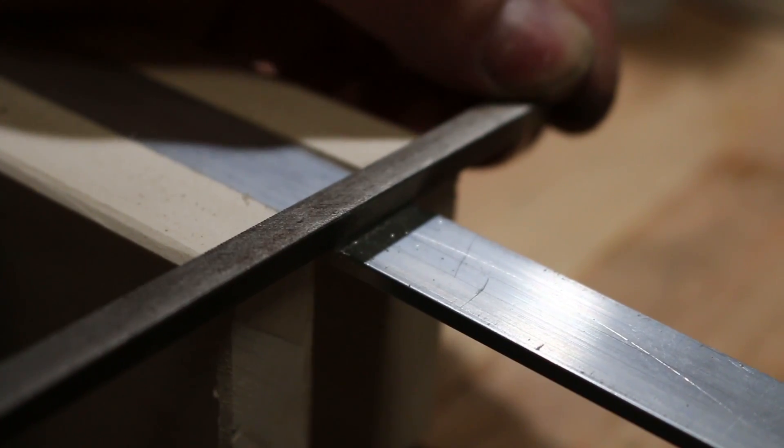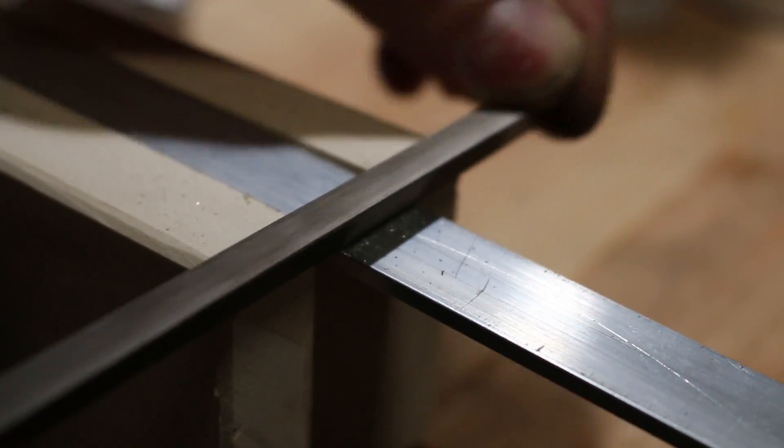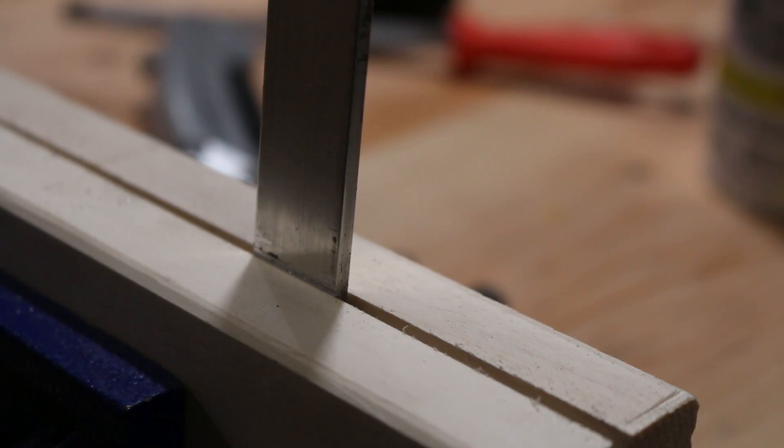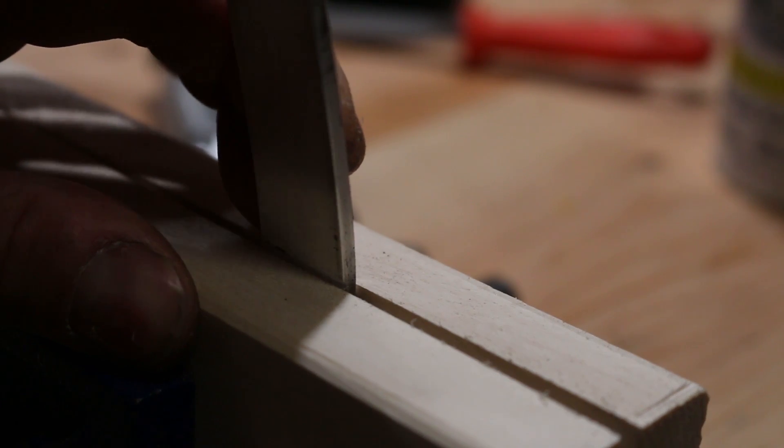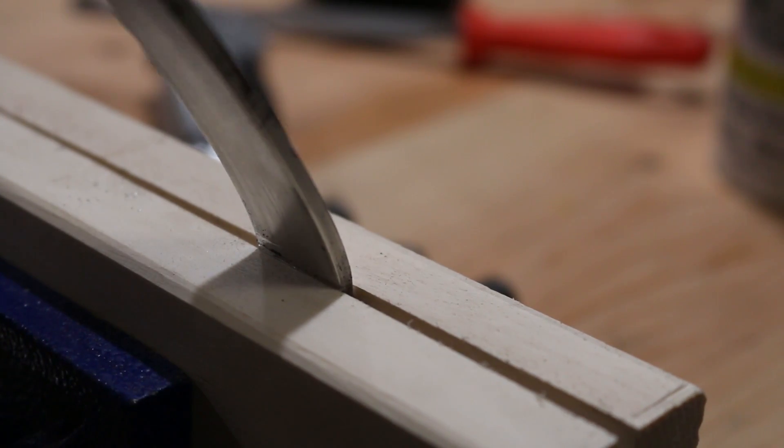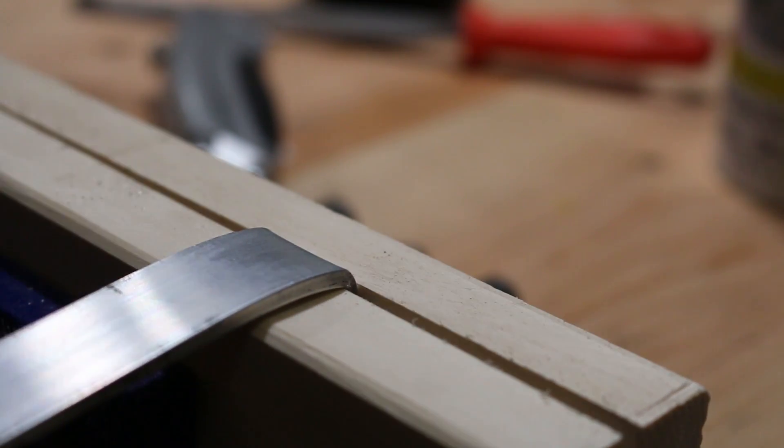I marked the insides of the two bends I am going to make on the aluminum support. Then I bent the aluminum by hand. And finished it with the hammer.